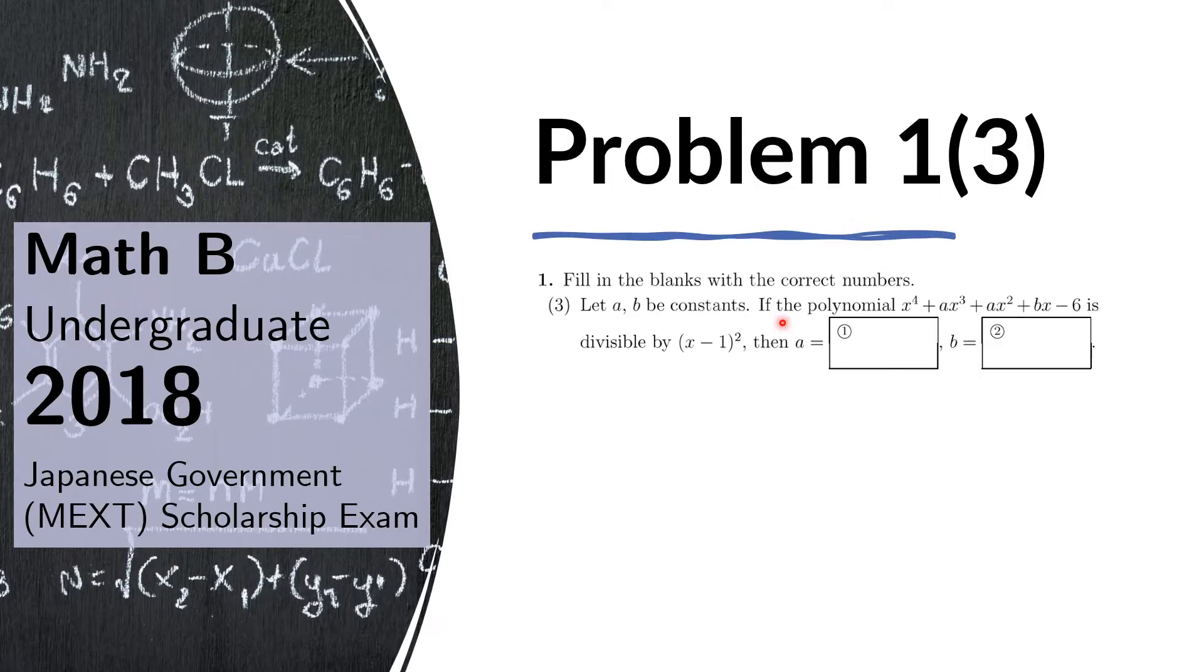Problem 3 of 1. Let A, B be constants. If the polynomial x to the 4th plus ax cubed plus ax squared plus bx minus 6 is divisible by x minus 1 squared, then A equals blank and B equals blank.